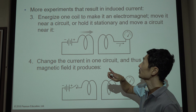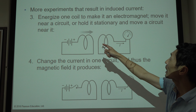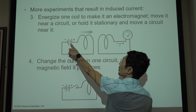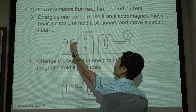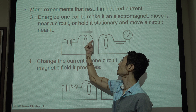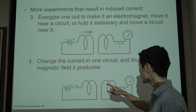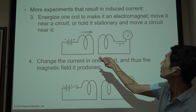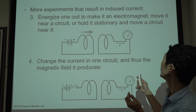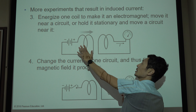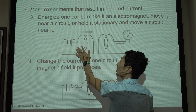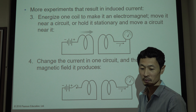There are more examples. Example three: energize one coil to make an electromagnet. If you have a current here, there will be a magnetic field — by the right-hand rule. This magnet holds this electricity. Then, if you move it toward another circuit, there will be a current in that other circuit. Or, you can fix this and move the circuit toward or away from this induced magnet, and there will be a current too.